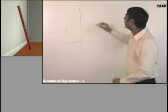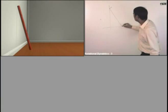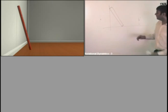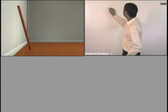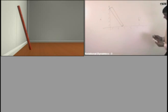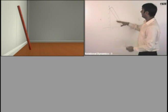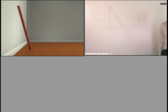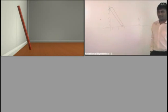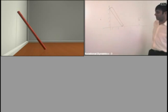Consider a scenario: there is a wall and a thin rod. This is a wall and a ground. The wall is frictionless and the ground is frictionless. Will the rod remain like this or will it start sliding? Because there is no friction on the wall and no friction on the ground, it will start sliding.